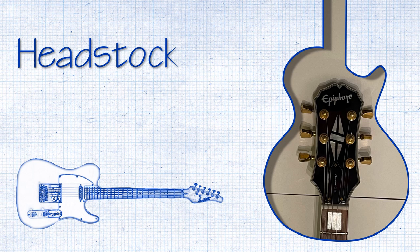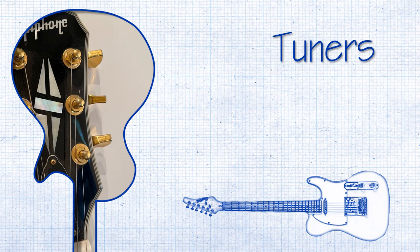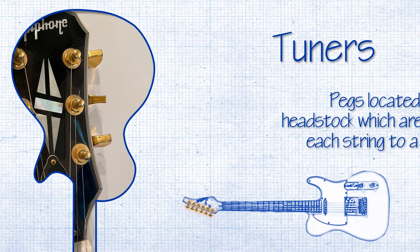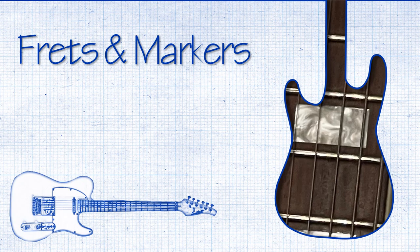The headstock is the part at the top of the guitar that holds the tuning pegs, posts, keys, and string trees. Tuners are geared pegs which guitar strings are fed through. These are then turned to tune the guitar.